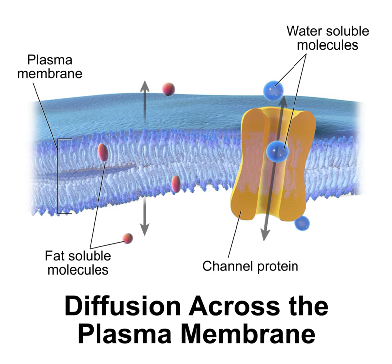The cell membrane consists of three classes of amphipathic lipids: phospholipids, glycolipids, and sterols. Phospholipids are the most abundant, often contributing over 50% of all lipids in plasma membranes. Glycolipids account for about 2% and sterols make up the rest. For the majority of eukaryotic cells, the composition of plasma membranes is about half lipids and half proteins by weight. The fatty chains in phospholipids and glycolipids usually contain an even number of carbon atoms, typically between 16 and 20.